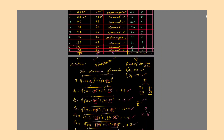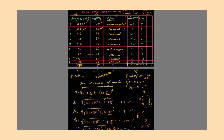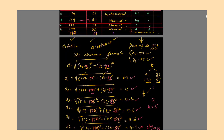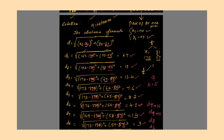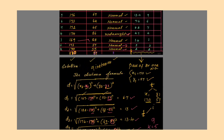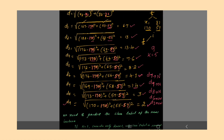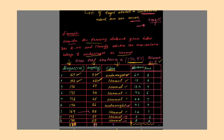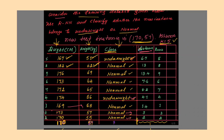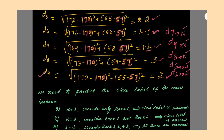Now check the class labels for these 5 nearest neighbors. D7 is normal, D9 is normal, D8 is normal, D6 is underweight, and D1 is underweight. So after sorting, we have: normal, normal, normal, underweight, underweight. Out of 5, 3 are normal and 2 are underweight, so majority is normal.